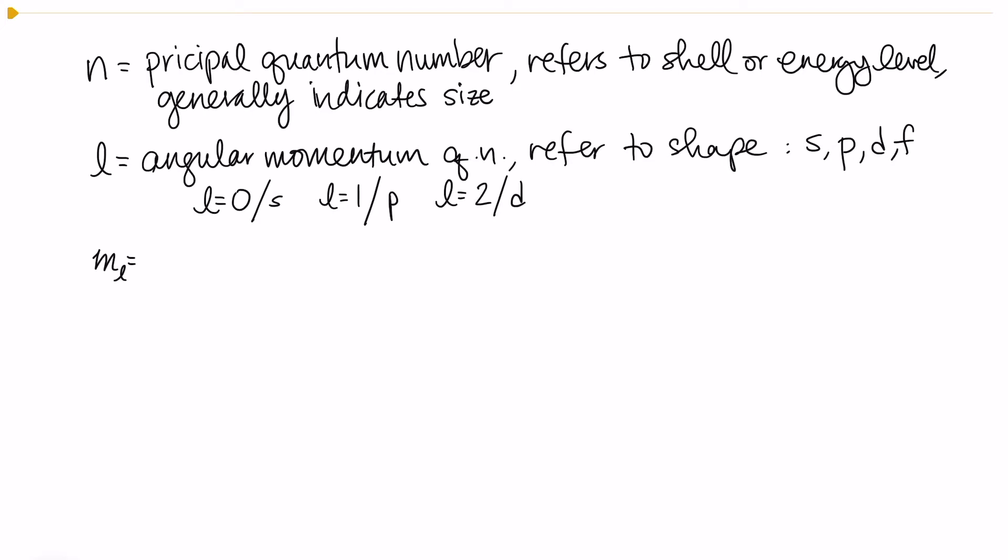The last one we're gonna talk about in this video is m sub l, which is our magnetic quantum number, and this one is going to refer to the orientation in space of the orbital. For our s orbitals this doesn't matter at all, but once we have p orbitals and d orbitals where there's multiple different kinds of orbitals in the same sub level, then this helps to distinguish between them. So for example, we can have a px orbital, a py orbital, and a pz orbital, and those are all gonna look a little bit different from each other.